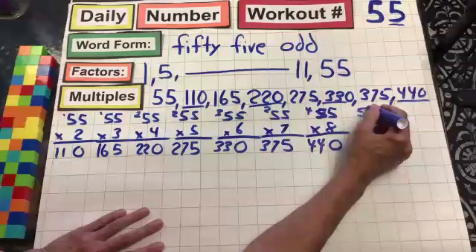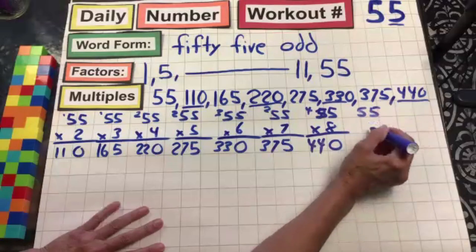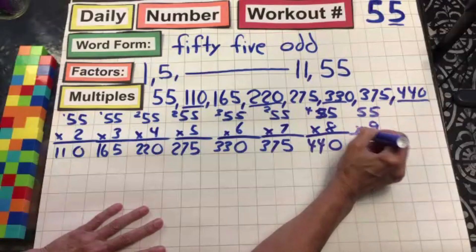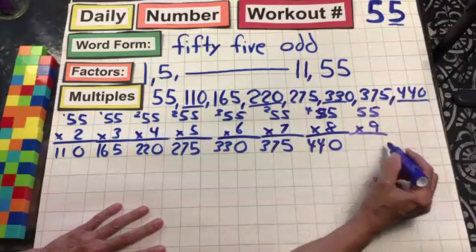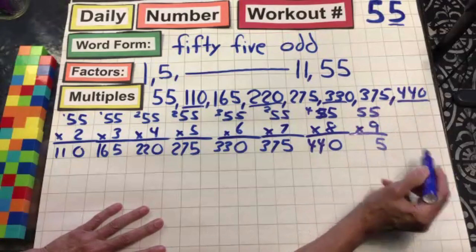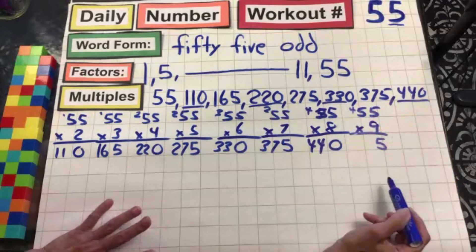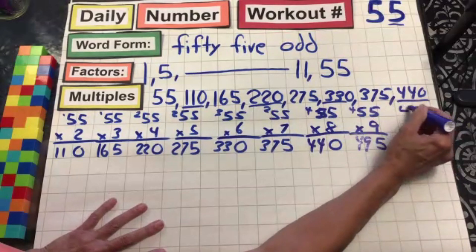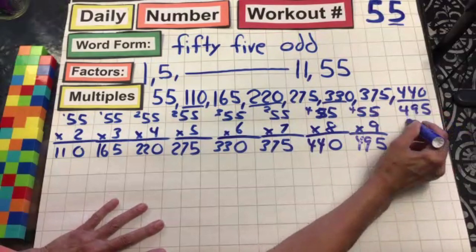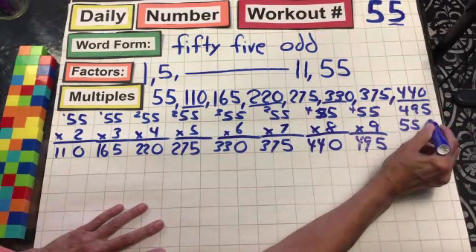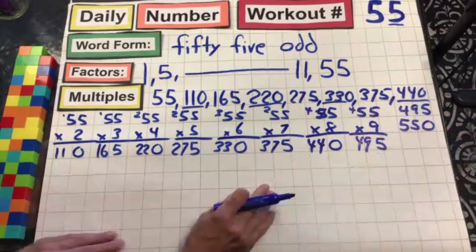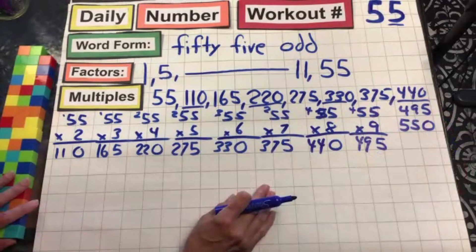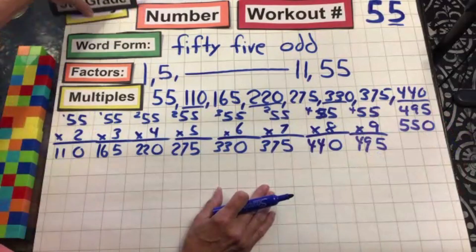55 times 9: 9 times 5 is 45, drop the 5, carry the 4, 9 times 5 is 45 plus 4 is 49, giving us 495. And of course, 55 times 10 is that number with a 0 in the ones place. Our multiples are done — looking good!